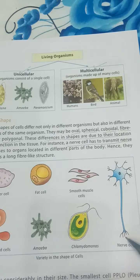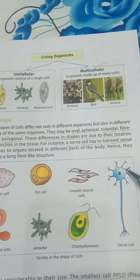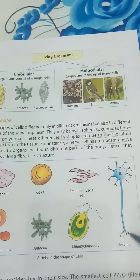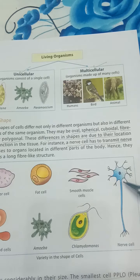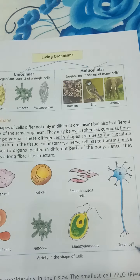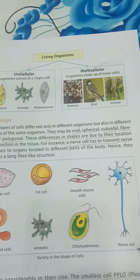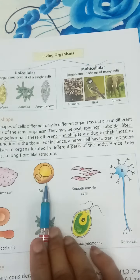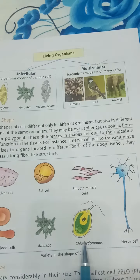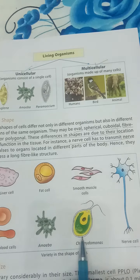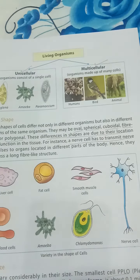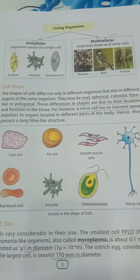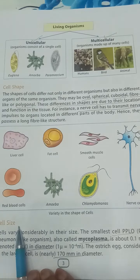The job of the nerve cell is to convey messages from one part of the body to another, which is why its length is quite long. Similarly, there are different types of cells with different shapes, and their shape depends on their function. The next topic is cell size.